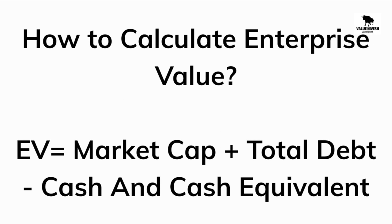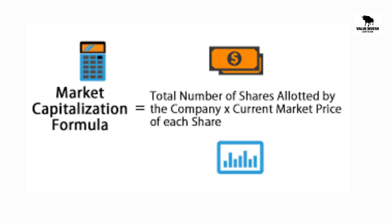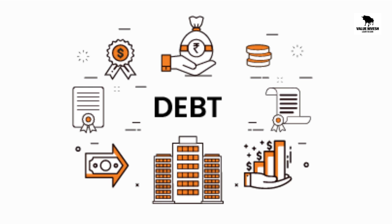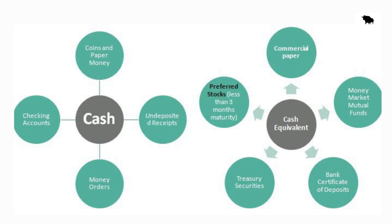Let us understand how to calculate enterprise value using its formula, and we will see a simple example. The formula to calculate enterprise value is: EV equals market capitalization plus total debt minus cash and cash equivalents. Market capitalization is calculated by multiplying the total number of outstanding shares by the current market price per share. Total debt includes both long-term and short-term debts. Cash and cash equivalents include cash in hand, bank accounts, and marketable securities.